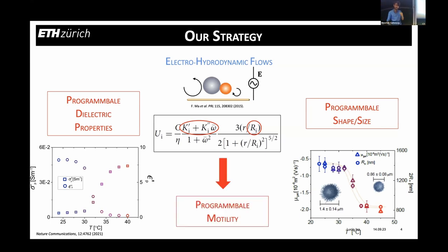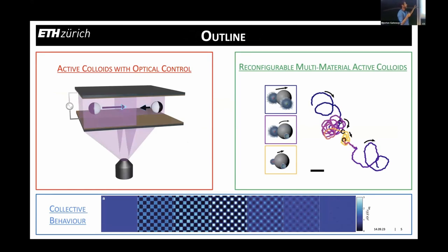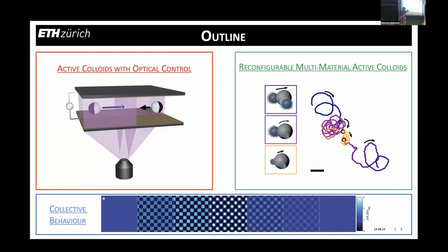That's the strategy we'll use to achieve programmable motility. In the first part of the talk I'll show how we do this using light — specifically by reconfiguring the dielectric properties of particles with light. In the second part I'll show how we use temperature to change the shape of the object, thereby modifying propulsion. Towards the end I'll show where we want to go with this: we're approaching the point where we can control collective behavior by programming the motility response at the single-particle level.